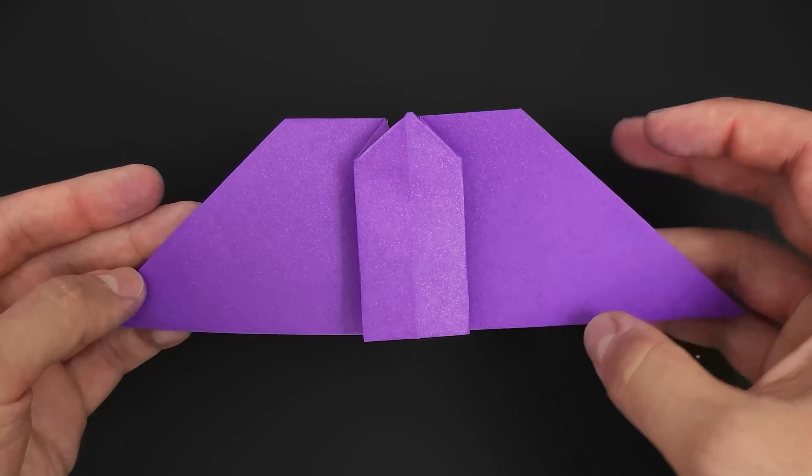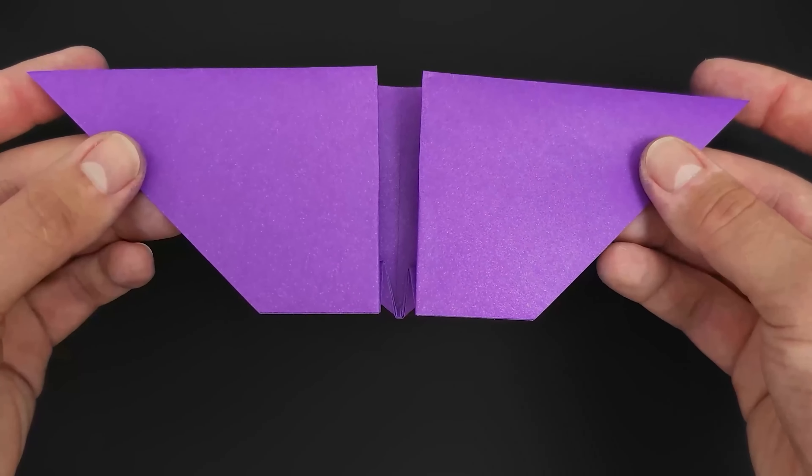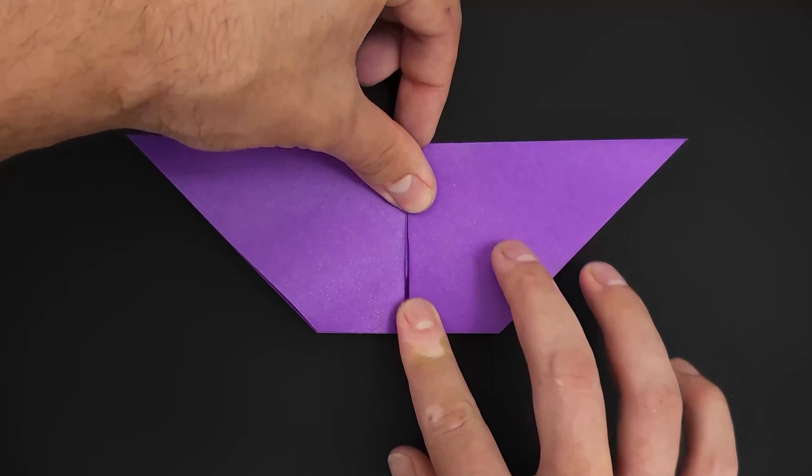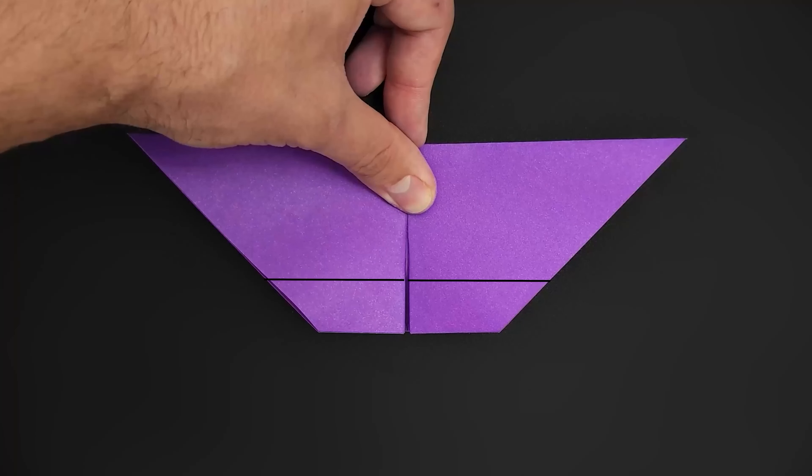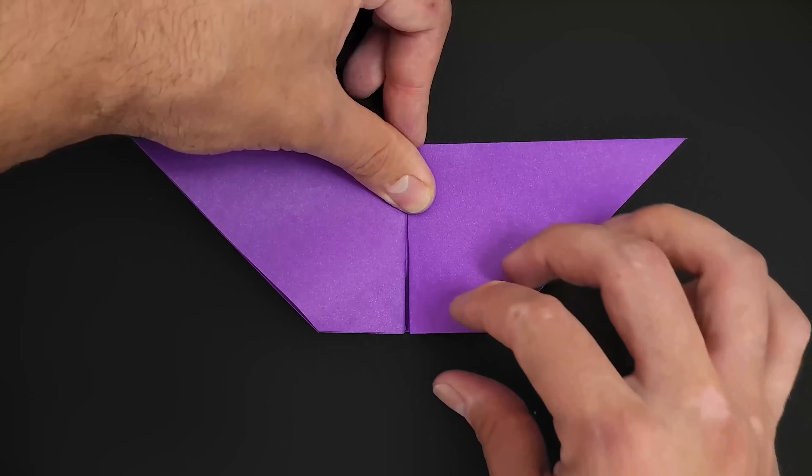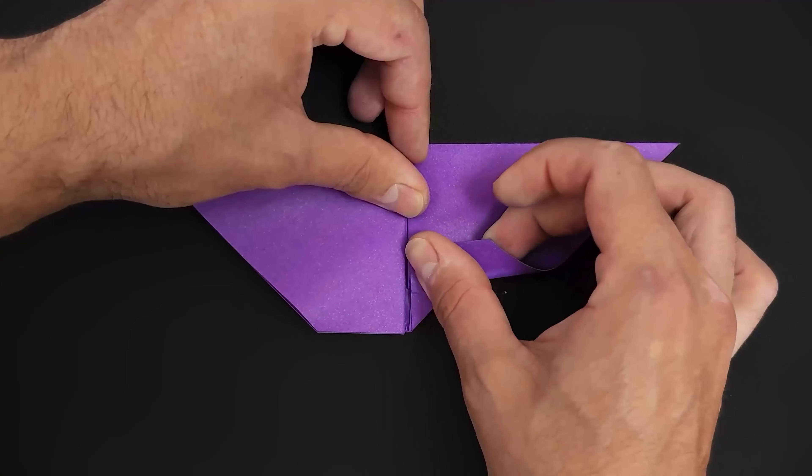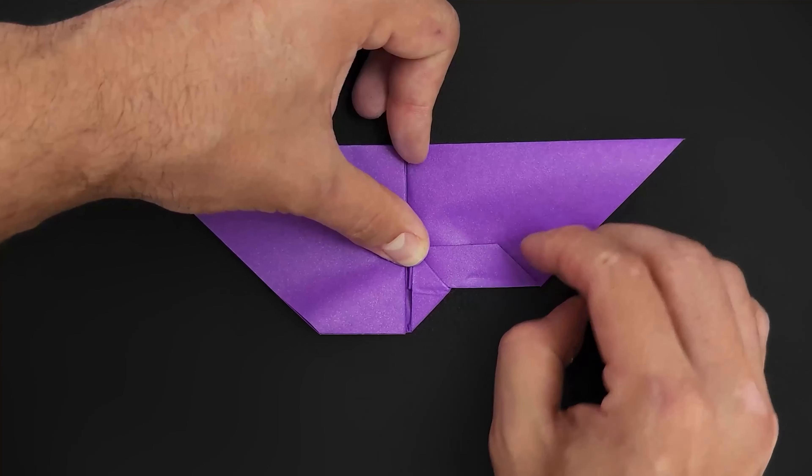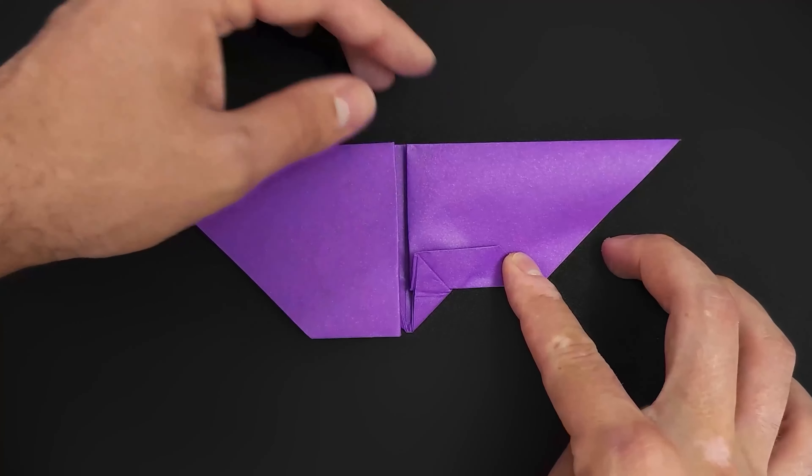Turn the paper over again, keeping it in this position. Fold the extra paper at the bottom. We can fold the right side first. And then the left.